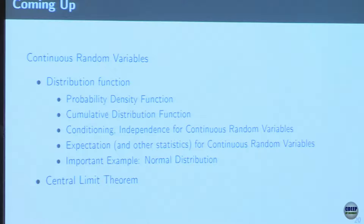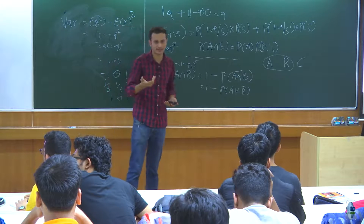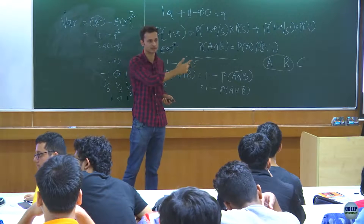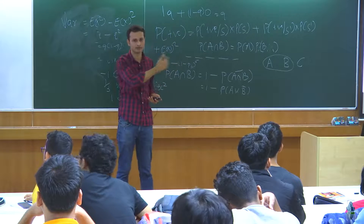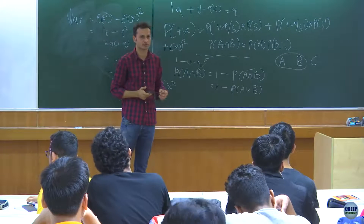Further, continuous random variables: we looked at discrete cases so far. Given a coin toss, can you get a continuous function from it? You can toss 100 coins — all heads can be decided as 1, 99 heads and last one tail as 0.99, and all tails as 0. This way you can approximate a uniform distribution from a discrete distribution.